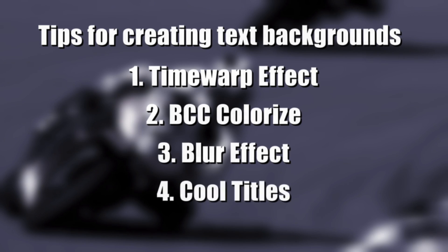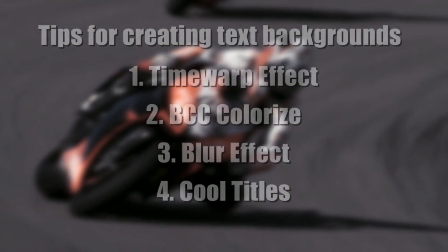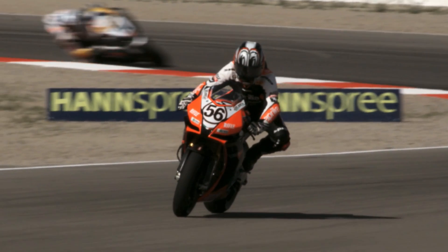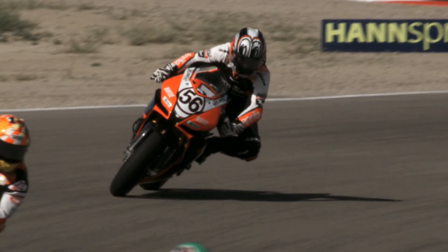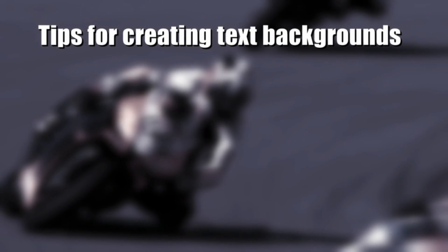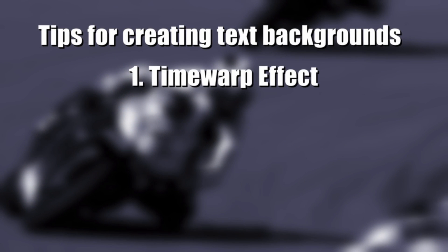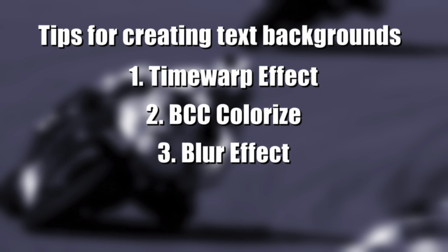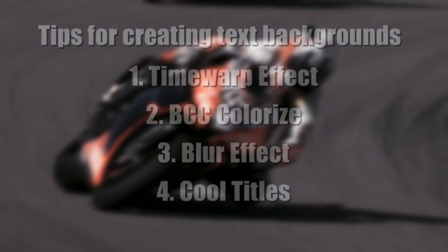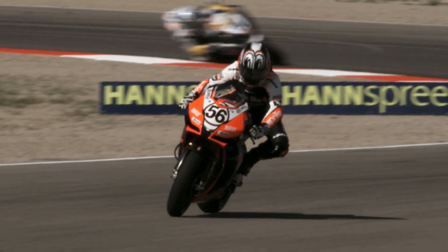We're going to use the Time Warp effect to take our footage, slow it down over a certain period of time for the text to be on top of. Second, we're going to apply a BCC Colorize effect. With your Media Composer subscription, you actually have access to BCC Light, which includes the BCC Colorize effect. So if you did subscribe to Media Composer, make sure you have those four effects included in BCC Light.